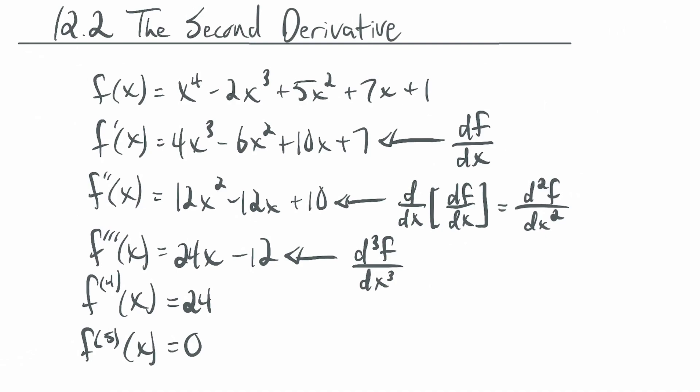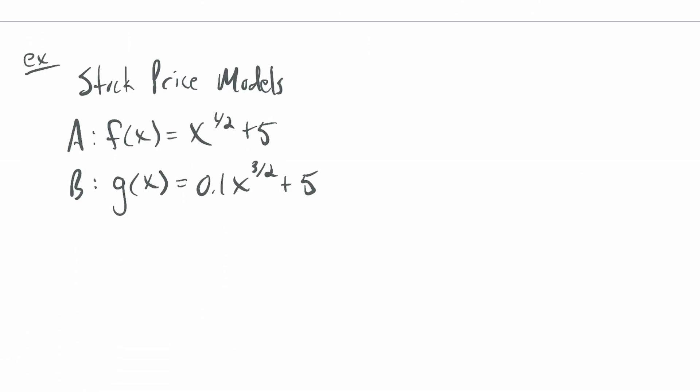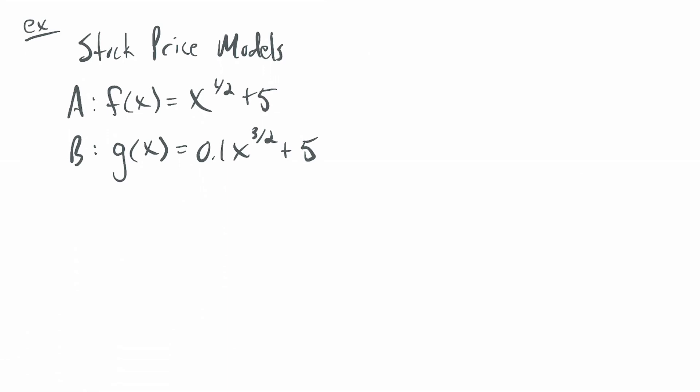The next thing is an application: why would we care about the second derivative? What's the meaning of it? Our first example compares two stock price models. Stock A is modeled by f(x) = x^(1/2) + 5, and stock B is modeled by g(x) = 0.1x^(3/2) + 5. Let's say x = 0 corresponds to right now. Which stock is going to be a better investment — which one's going to grow the most?